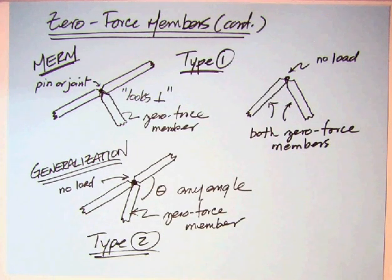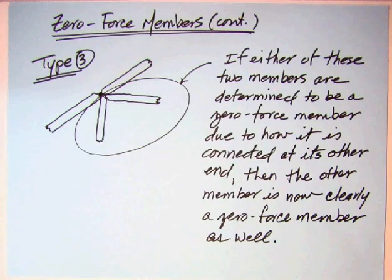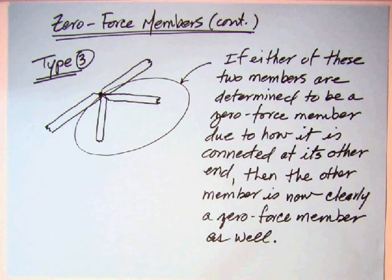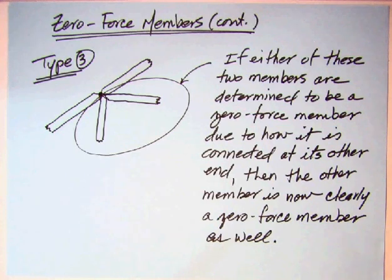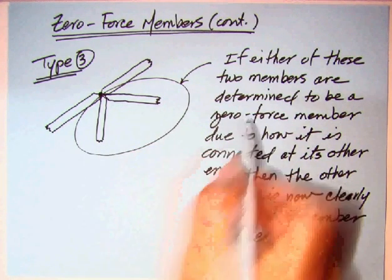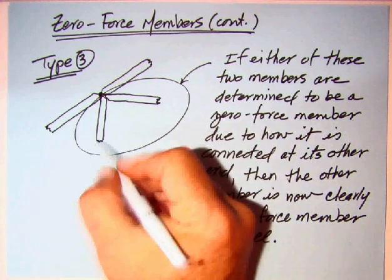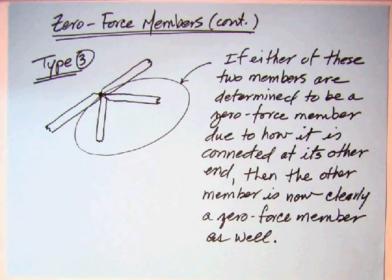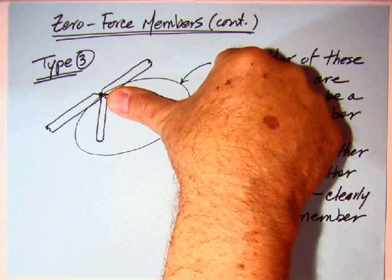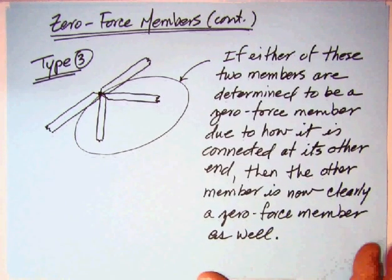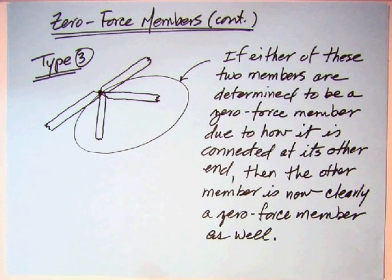Type 3 is where four members are actually coming together, so the rule of three forces coming together takes over in a way. If either of two members is determined to be a zero force member due to how it's connected at the other end — whether going in 90 degrees to another set of two members, or at an angle into another — one of the two becomes a zero force member. While you can't take it out, you can imagine it's gone, which reduces the situation to a Type 2. So that's why it's called Type 3, and then the other member is clearly a zero force member as well.